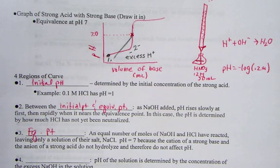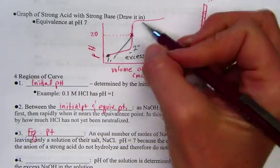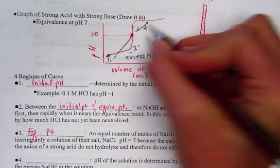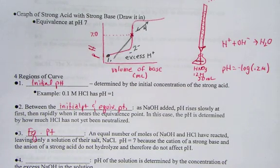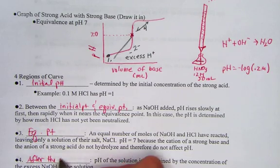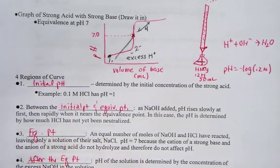If we overshoot the end point, the pH continues to rise, and that would be the fourth point of interest. Past the equivalence point, we continue to add base, the base becomes the excess reagent. So in region 4, after the end point, or after the equivalence point, the pH now is determined by the concentration of the excess amounts of NaOH.